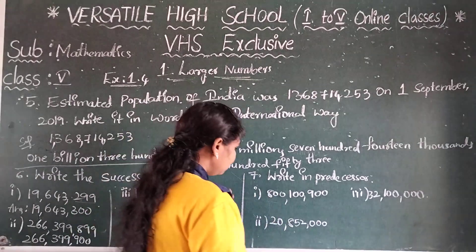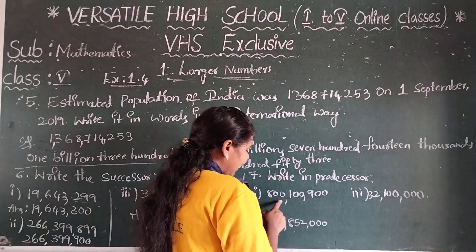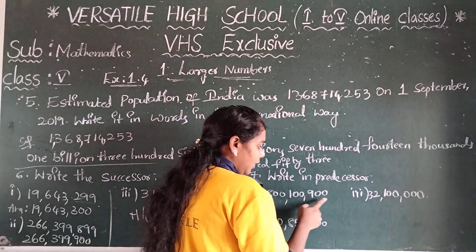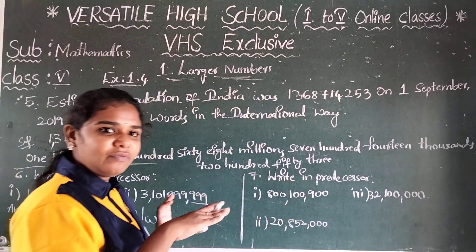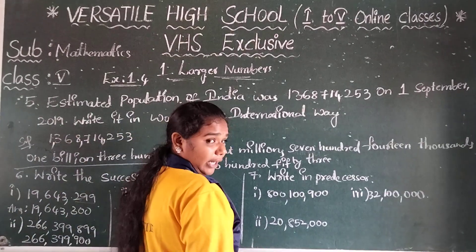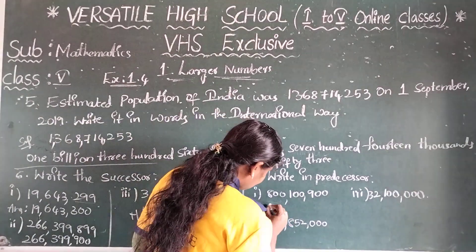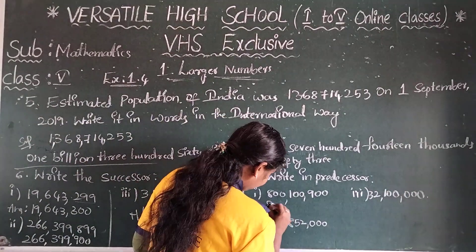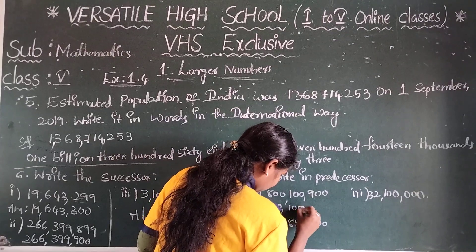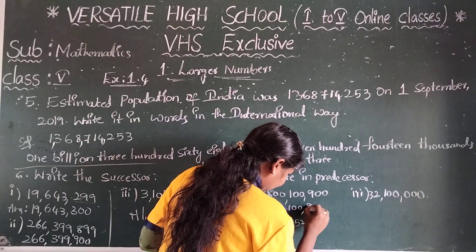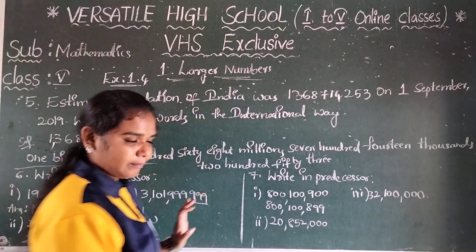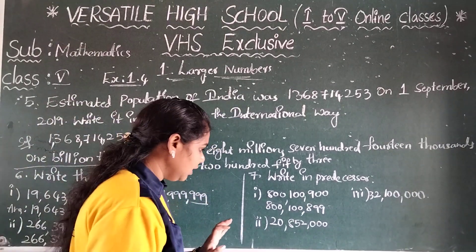The first number is 800,100,900. Predecessor means the number before. 900 before becomes 899. So the answer is 800,100,899.